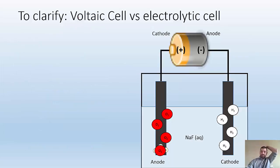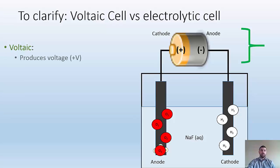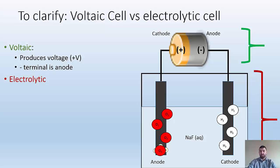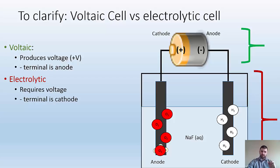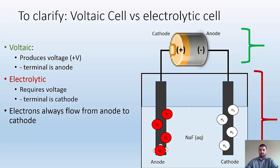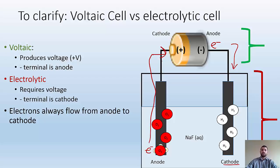To clarify: voltaic cell versus electrolytic cell. The voltaic cell is the part providing power — it produces a positive voltage, and its negative terminal is the anode. The electrolytic cell requires voltage; we're making a non-spontaneous reaction occur by using the voltaic cell to power it. The positive and negative terminals get switched between the voltaic and electrolytic cell. But electrons always flow from the anode to the cathode — that is always true. So if you're asked to describe the flow of electrons, safe bet: always anode to cathode.